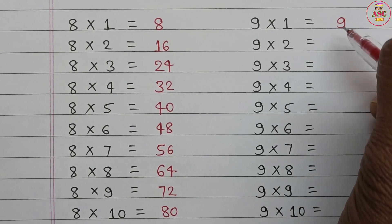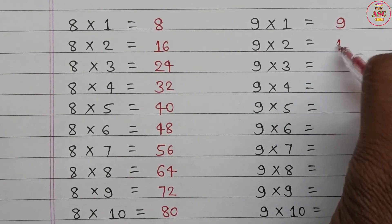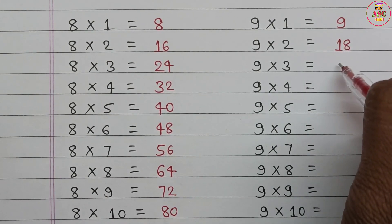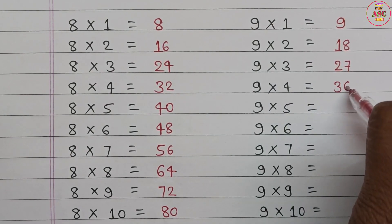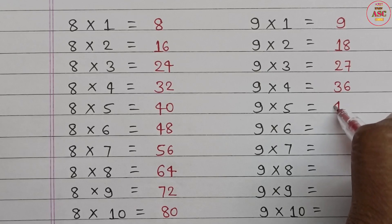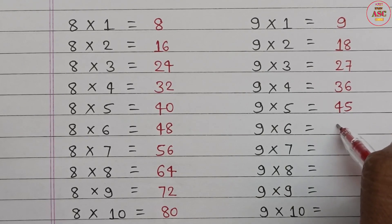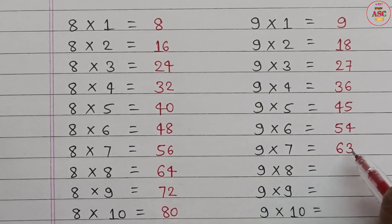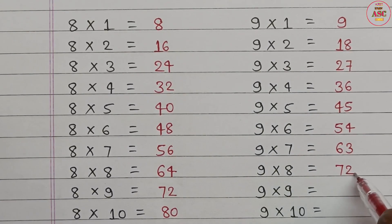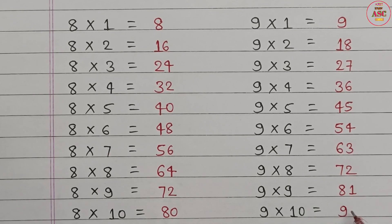9 times 1 equals 9. 9 times 2 equals 18. 9 times 3 equals 27. 9 times 4 equals 36. 9 times 5 equals 45. 9 times 6 equals 54. 9 times 7 equals 63. 9 times 8 equals 72. 9 times 9 equals 81. 9 times 10 equals 90.